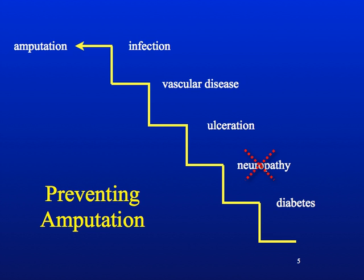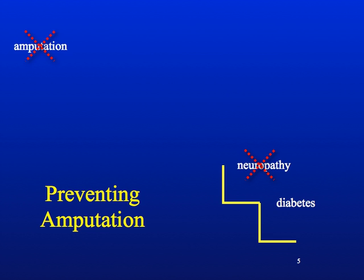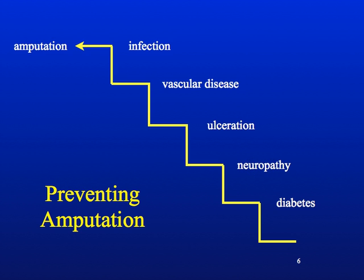Likewise, if you can prevent a diabetic foot ulceration through custom footwear or good patient education — giving the patient a dermal thermometer to monitor their foot temperatures to warn them of inflammation occurring, or perhaps soft tissue-expanding substances like PLA injections or silicone injections — if you can prevent this ulceration from occurring, then you can prevent the infection and you can prevent an amputation.